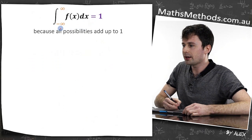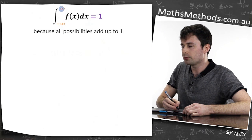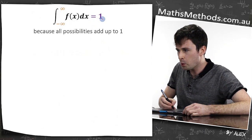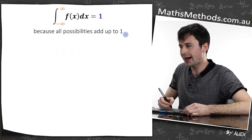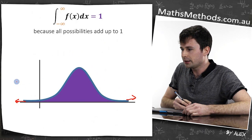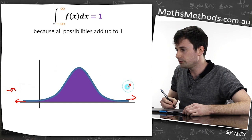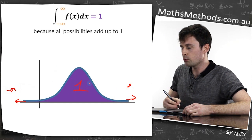Now if we integrate from negative infinity all the way up to infinity, that's going to give us one, because all probabilities add up to one. If we integrate between negative infinity all the way up to infinity, the area of this is going to equal one.